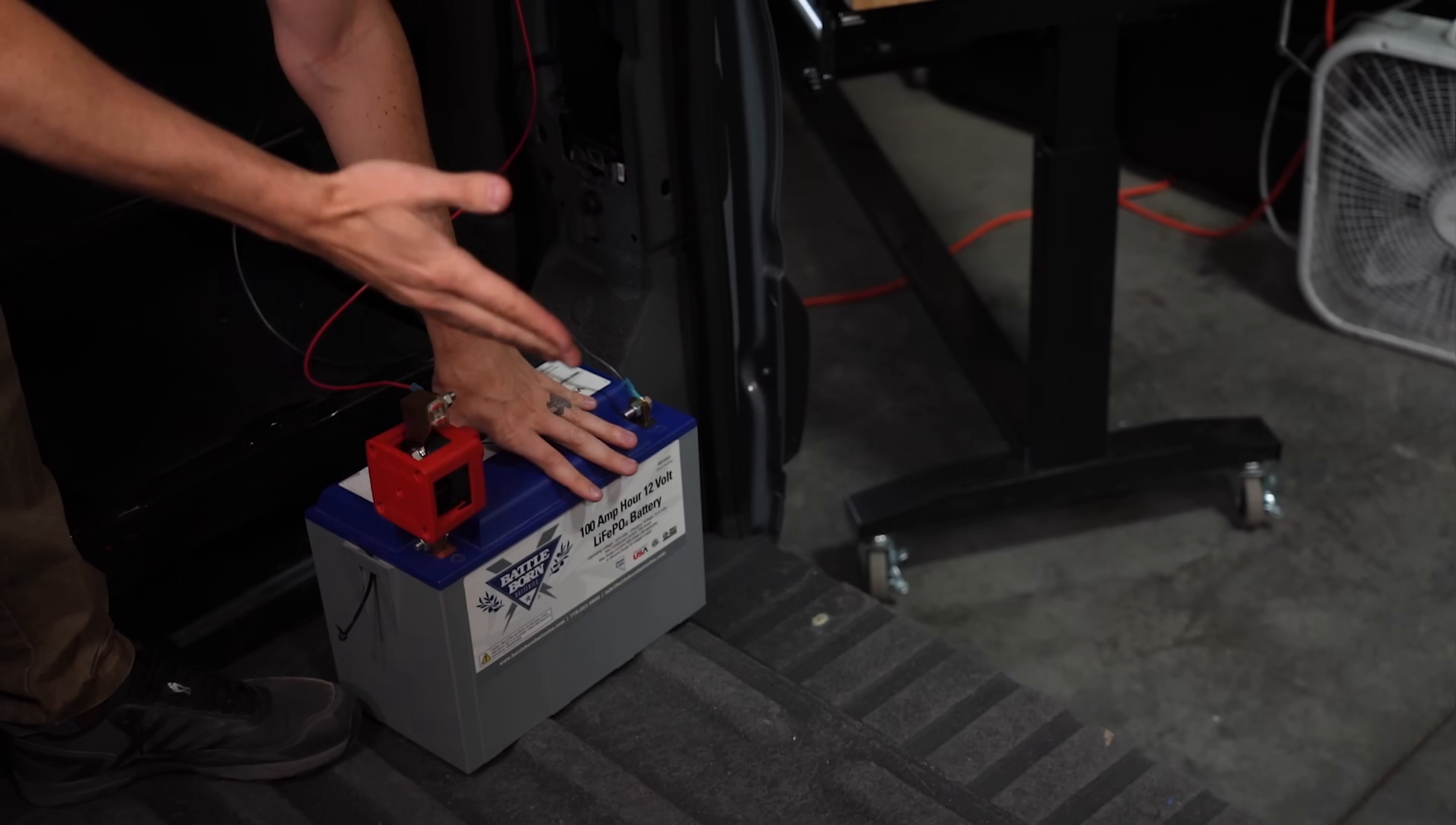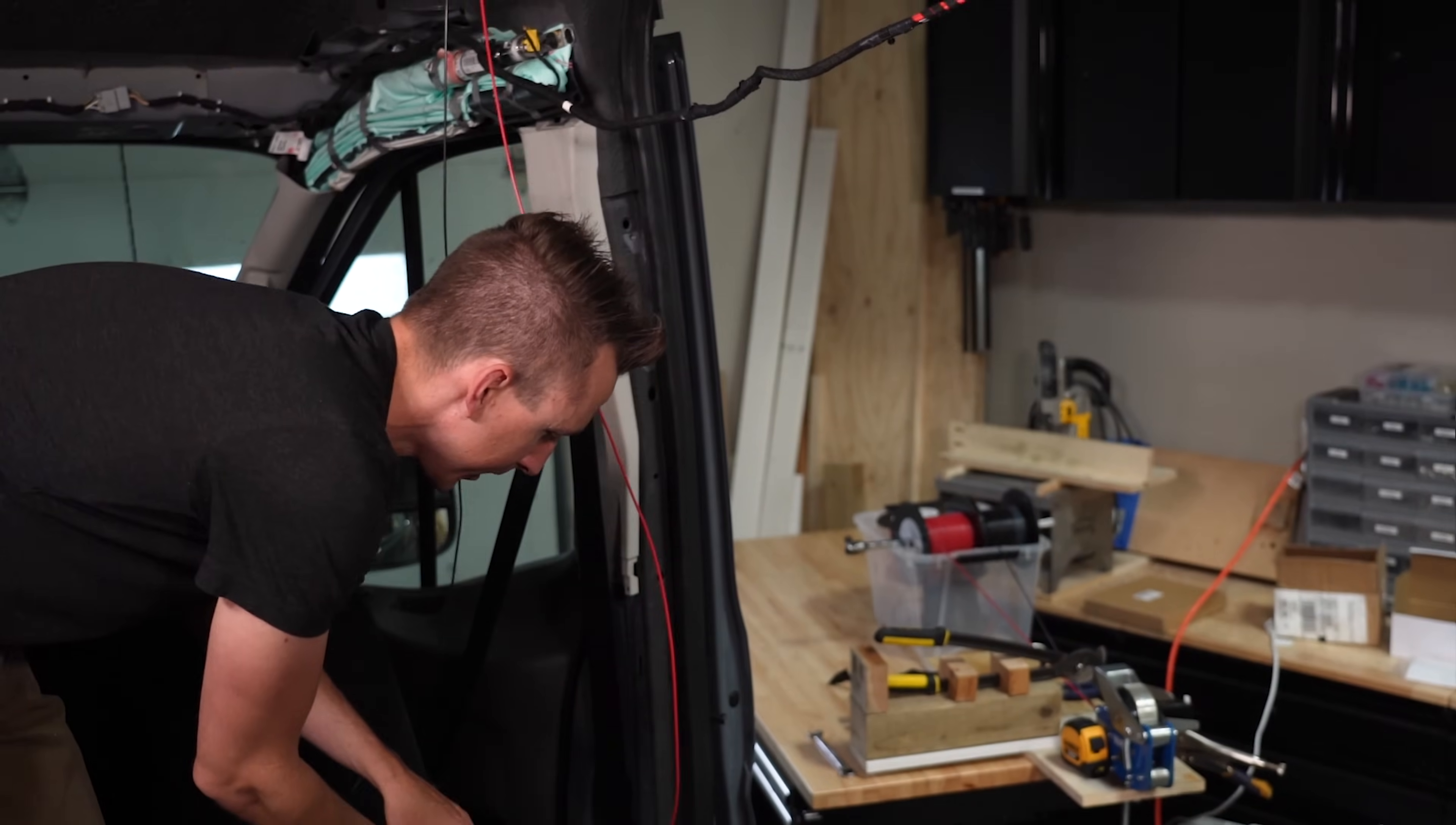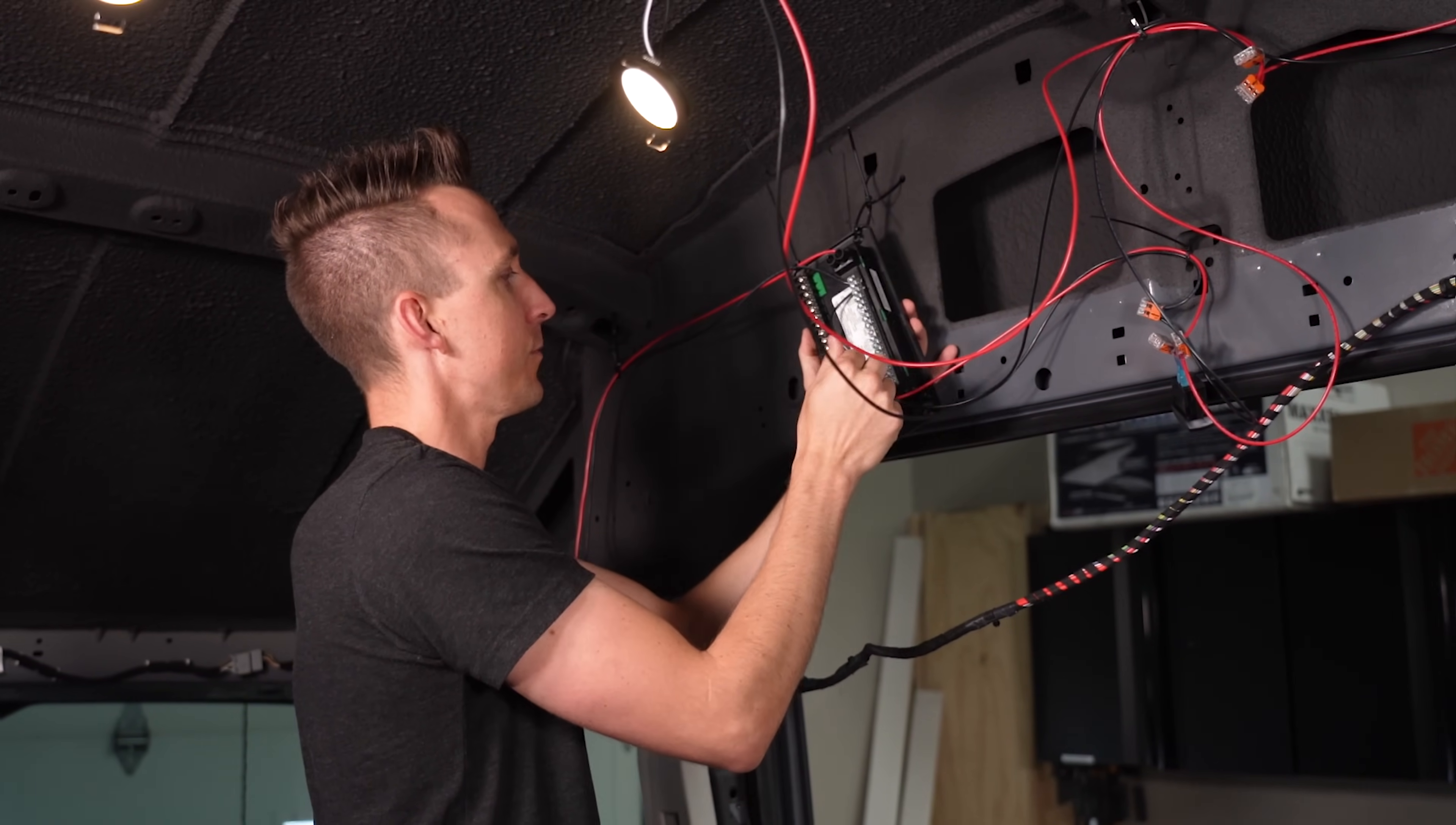Down here, we've got a single 100 amp hour Battleborn lithium battery that is just serving as power for our testing purposes. The battery bank will be in the back, but ultimately for this, we're just putting it here for now. Got positive and negative wires that are coming up to our temporarily installed fuse block that's right here. This will live in this general vicinity, actually mounted up properly, but we just have it zip-tied for temporary for now.